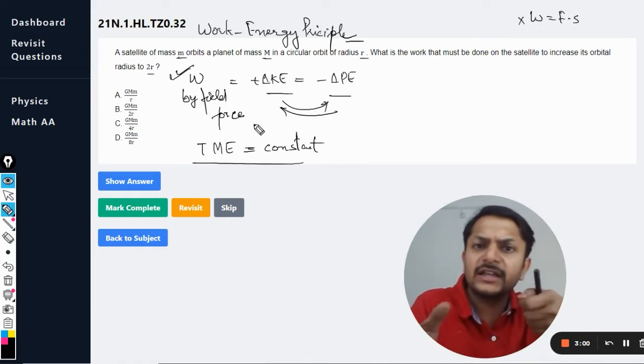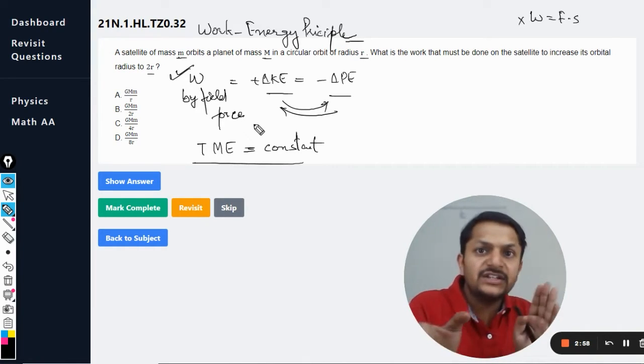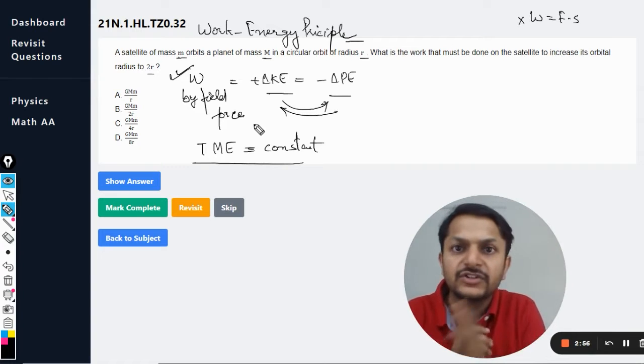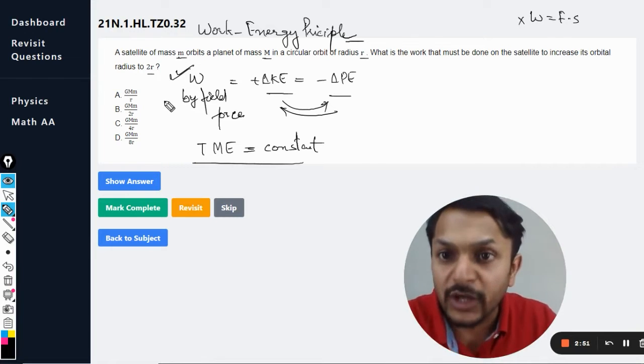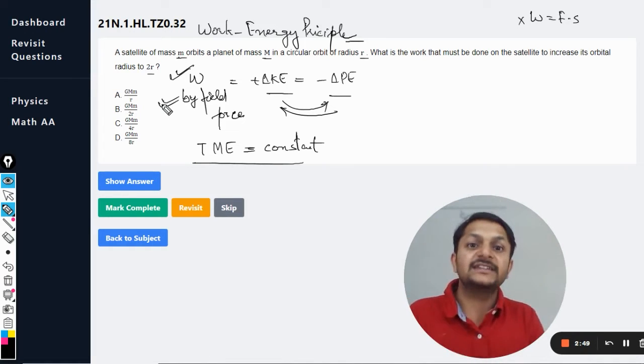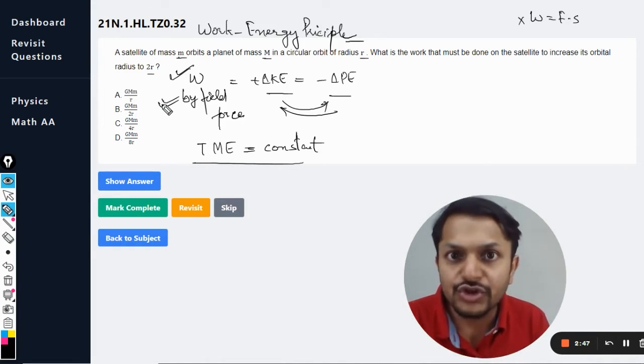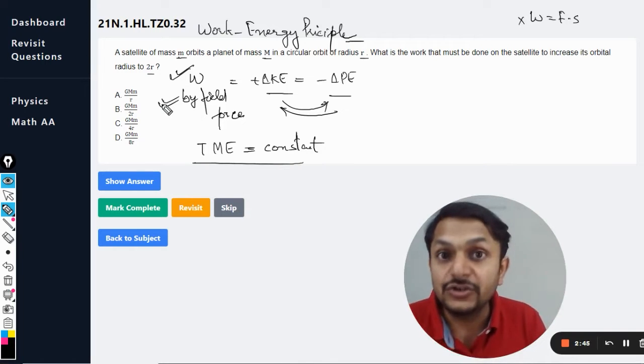You just do some work and then you leave it, and then the potential energy converts into kinetic, kinetic converts into potential, and the body keeps on moving like this. So that is the case in which this formula is valid.